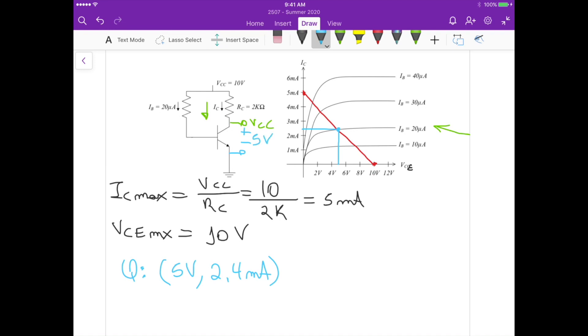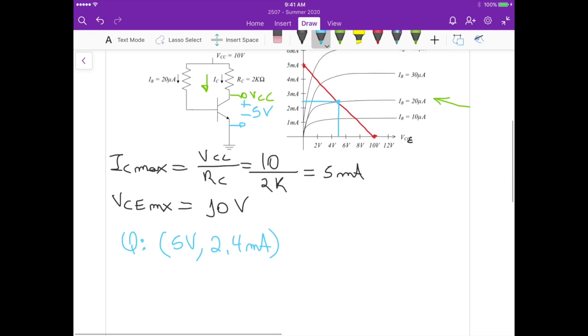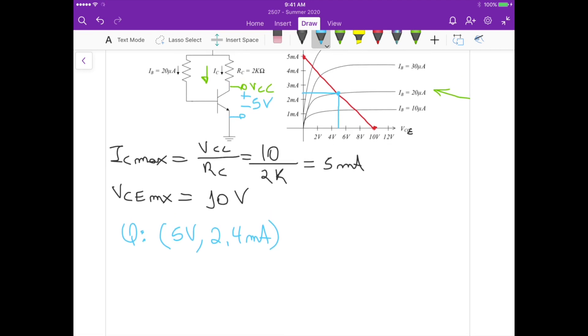So now that we know the collector current that is actually flowing through the circuit to the collector terminal of the BJT, we can calculate the gain beta, which is equal to the collector current divided by the base current. So this is 2.4 milliamperes divided by the base current, which is 20 microamperes, and this gives us 120.